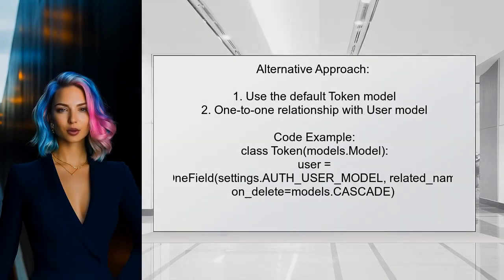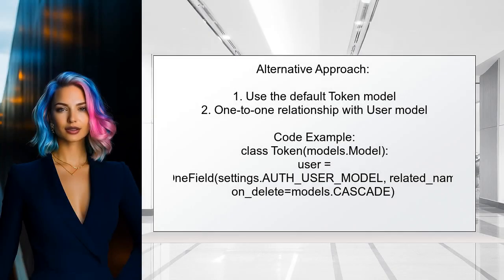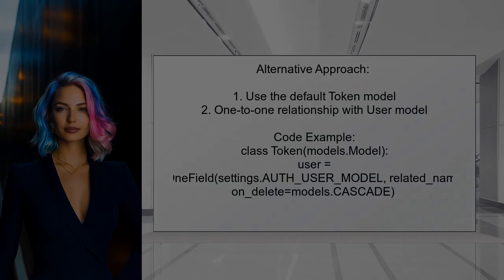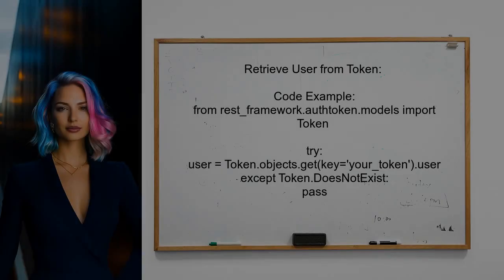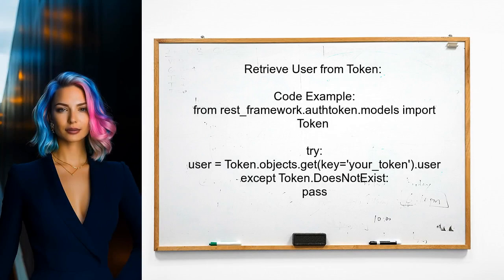Another approach involves using the default authorization token model in Django REST Framework. This model establishes a one-to-one relationship with the user model. To retrieve the user object associated with a specific token, query the token model using the token key. If the token exists, you can access the user directly.